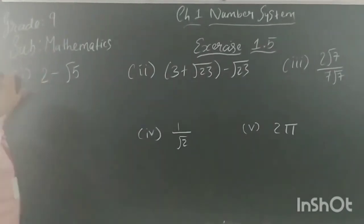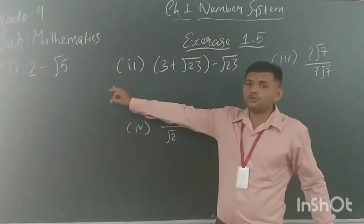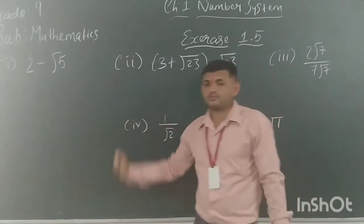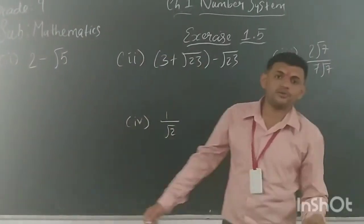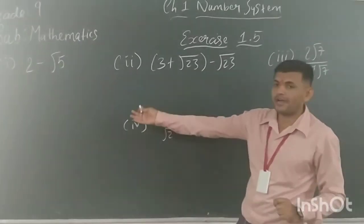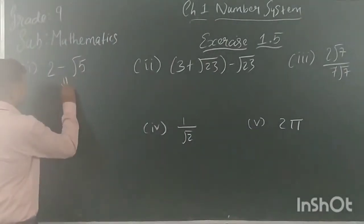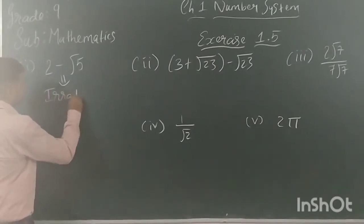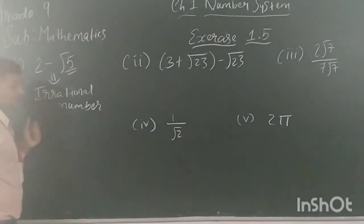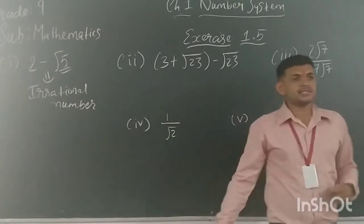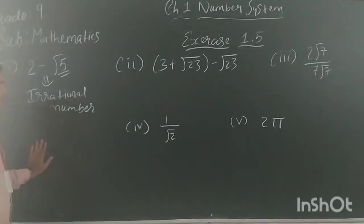First question: 2 minus root 5. Here you need to go with the flow. Can you carry out any operation with root 5? No — 2 and root 5 are unlike numbers, so no operation can be carried out. And since 5 is a prime number, root 5 is the square root of a prime number. So 2 minus root 5 is an irrational number.